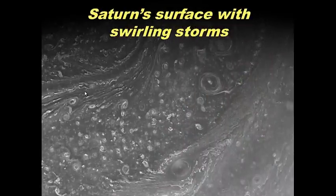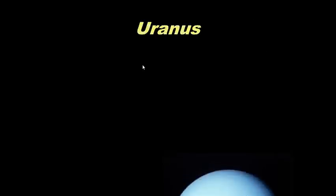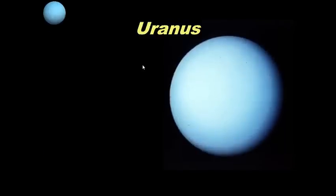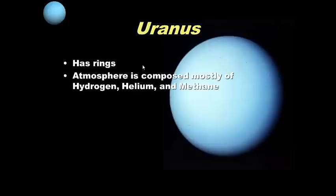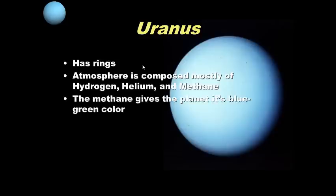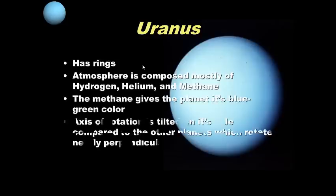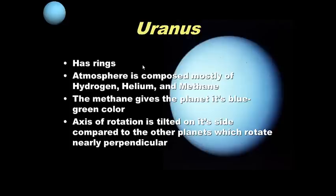As Voyager flew by Saturn, you can see swirling storms on its surface — swirling gases of hydrogen and helium. Our next planet is Uranus. Like Saturn, Uranus has rings. Its atmosphere is composed mostly of hydrogen, helium, and methane. The methane gives the planet its bluish-green color. The unique thing about Uranus is that its axis of rotation is tilted on its side compared to other planets, which rotate nearly perpendicular north to south.